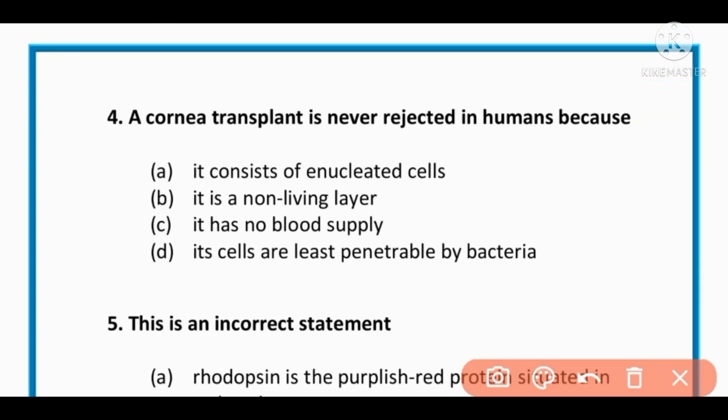MCQ number 4: A cornea transplant is never rejected in humans because: it consists of enucleated cells, it is a non-living layer, it has no blood supply, or its cells are least penetrable by bacteria. The correct option is C: it has no blood supply.